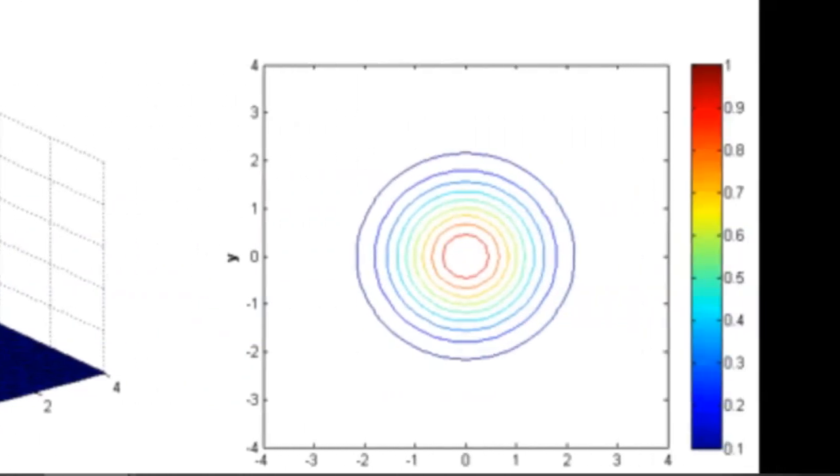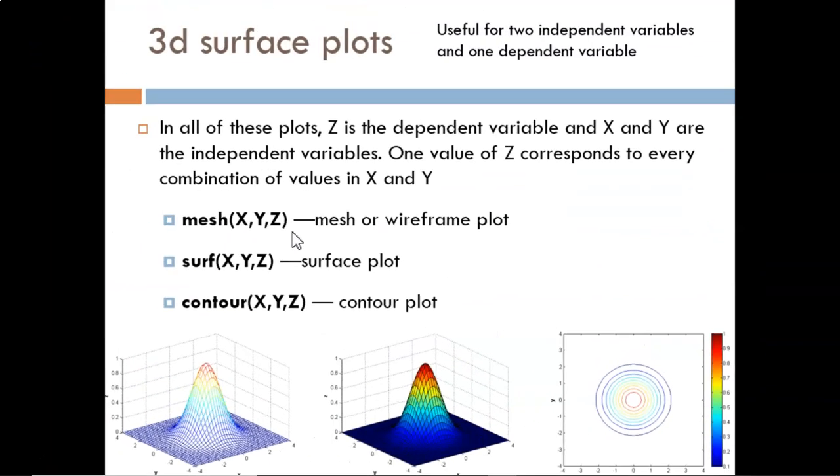And a contour plot, shown on the right, is a mesh plot viewed from above, with each line indicating a change in elevation. For all of these, there are two independent variables from which a single dependent variable is computed.